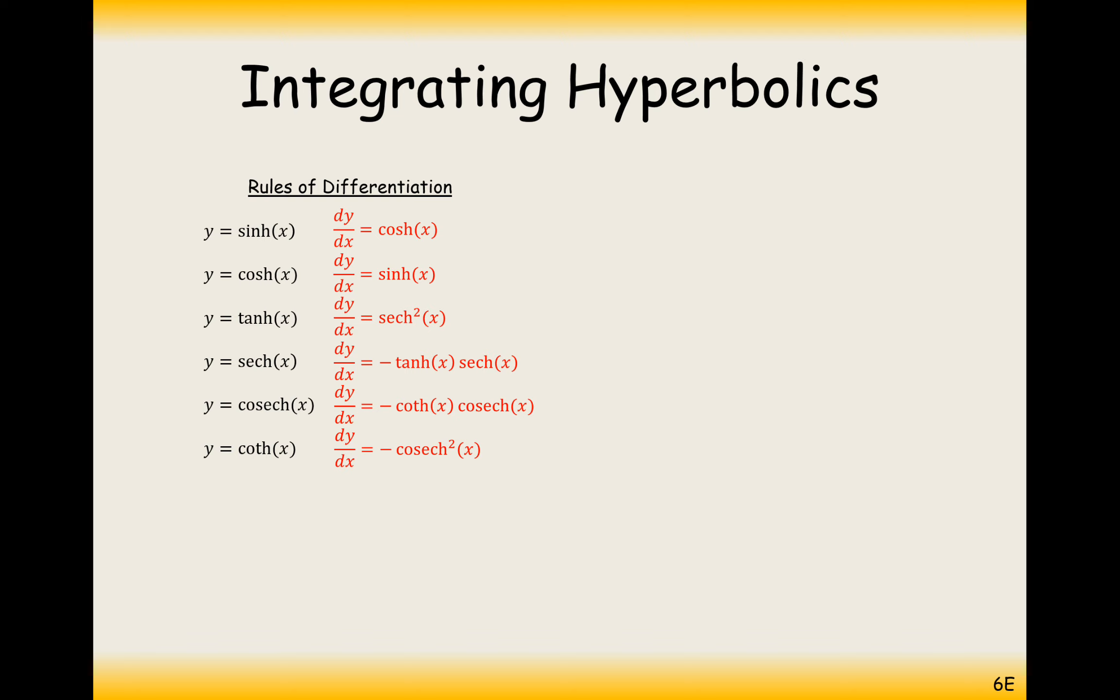We can use these rules in reverse and call them the rules of integration because differentiation is the reverse of integration. So the integral of cosh x is sinh x plus C. Integral of sinh is cosh. Integral of sech squared is tanh. Integral of tanh sech is minus sech. The integral of coth cosech is minus cosech. The integral of cosech squared is minus coth.